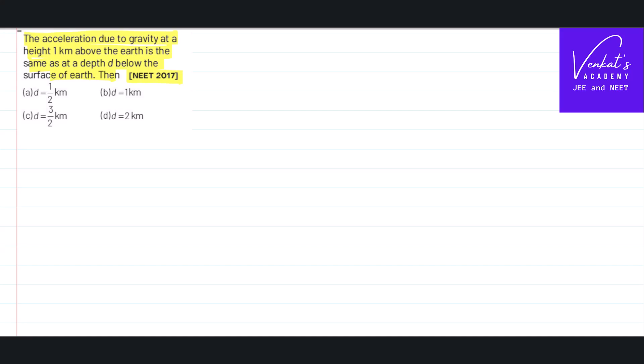So he is asking if we go to a height 1 kilometer from surface of the earth, there is some g dash. He is asking at what depth into the earth we have to go so there also we have same g dash. That is the question.